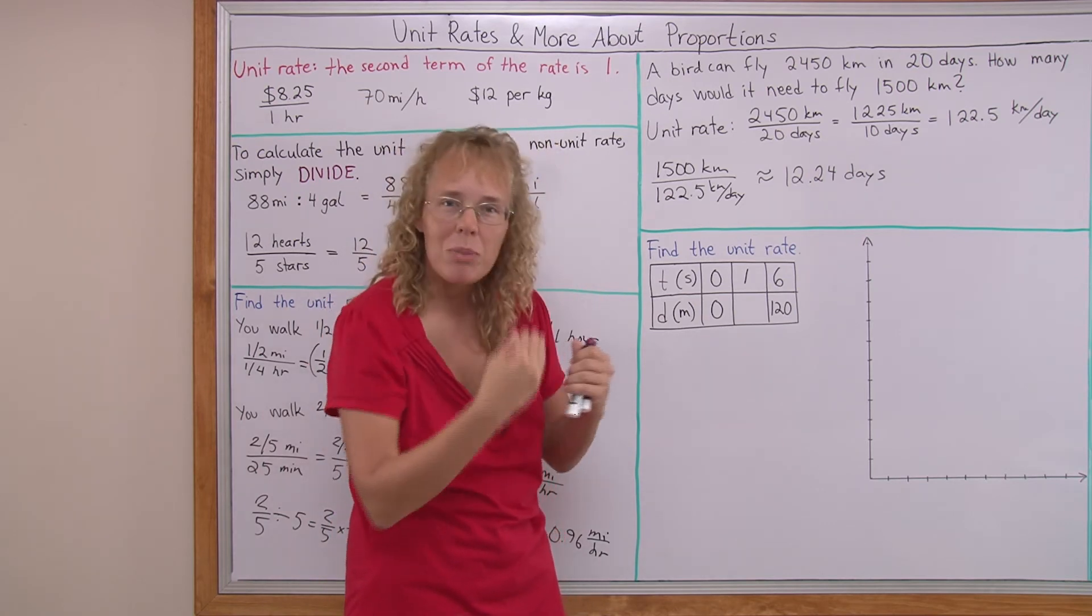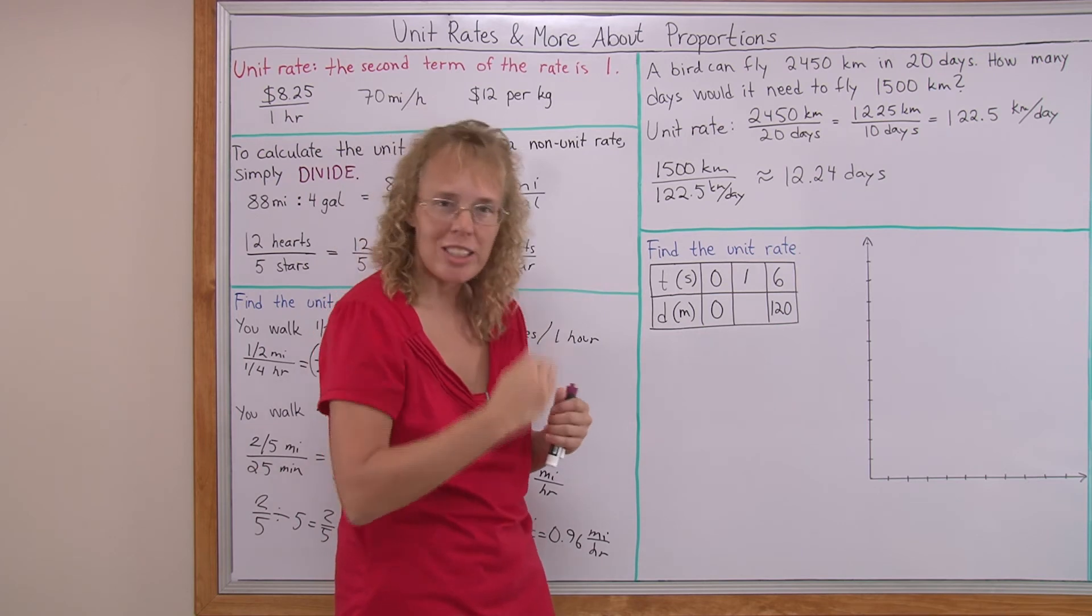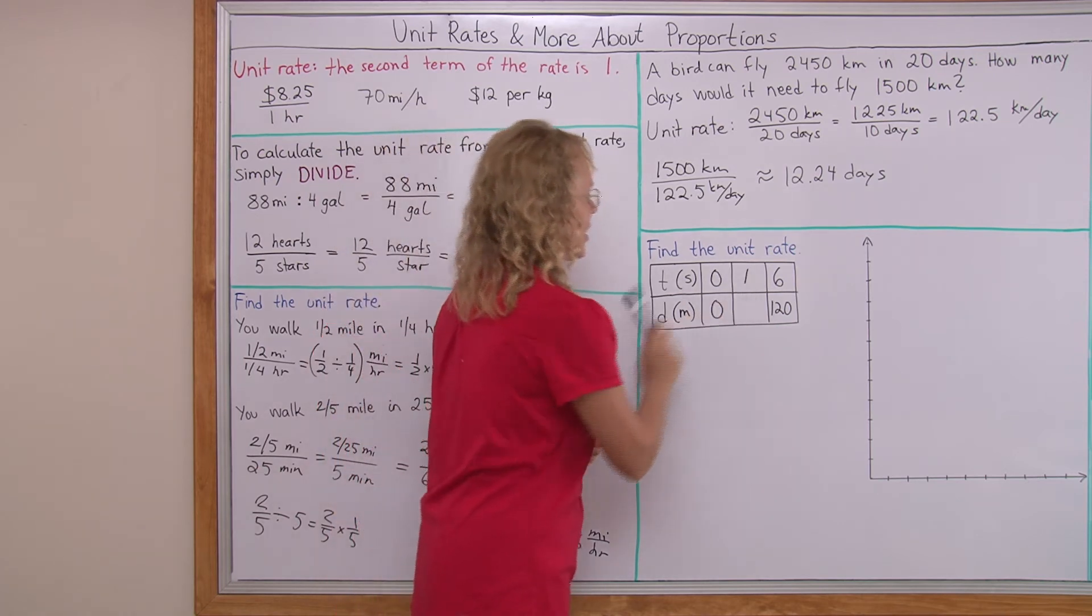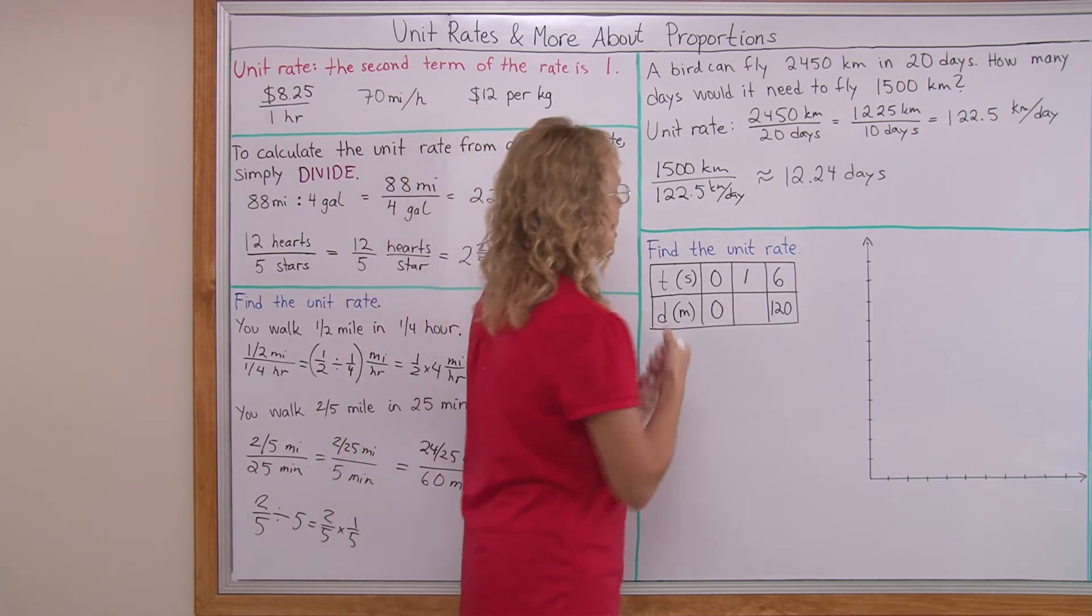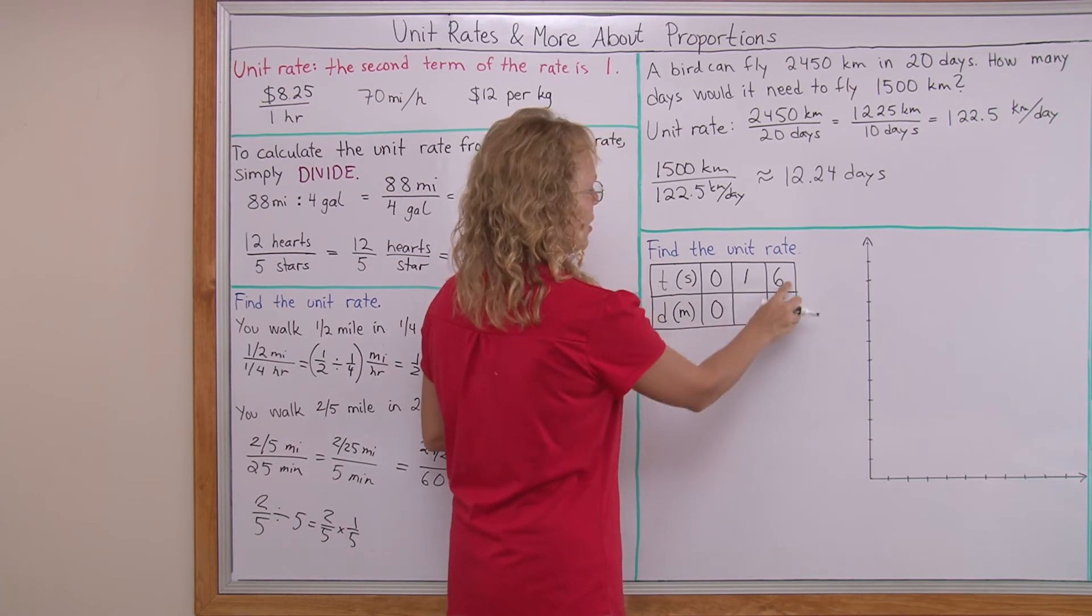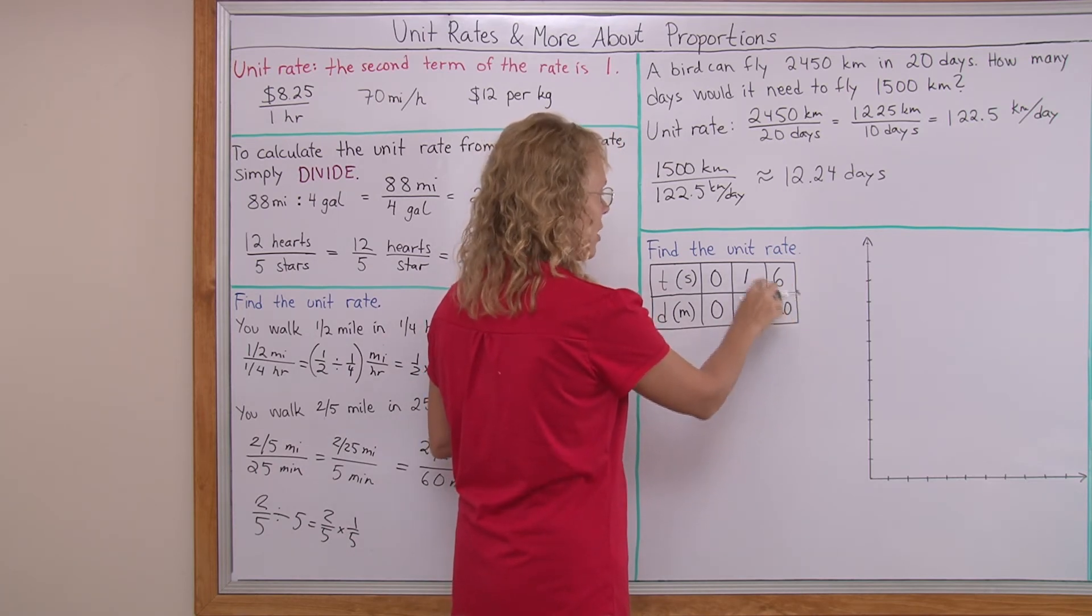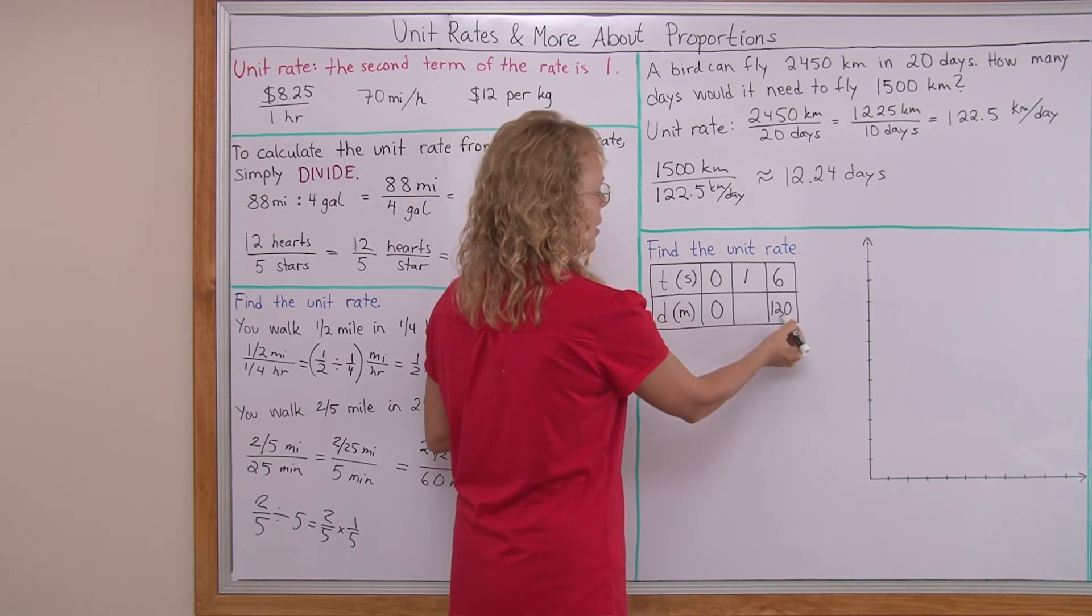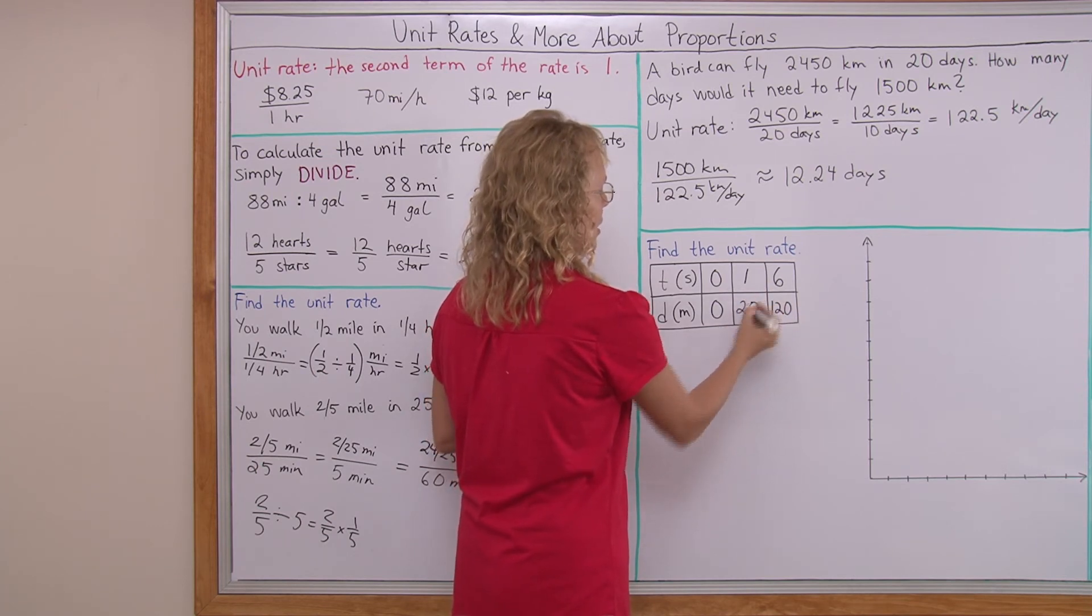It is meters per second. It's not seconds per meters. It's meters per second. So that's why I put one second, not one meter. And of course, you can easily see if in six seconds, 120 meters, then in one second, one sixth of that number or 20 meters.